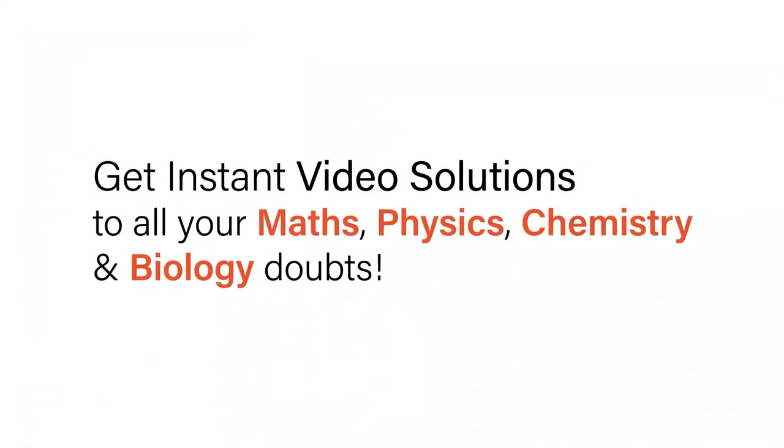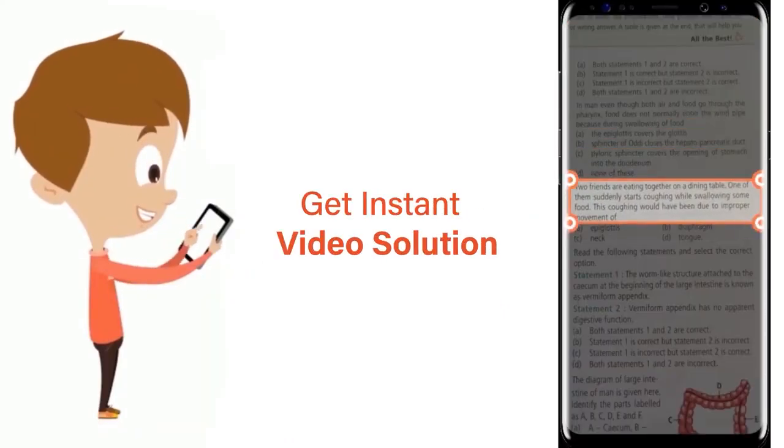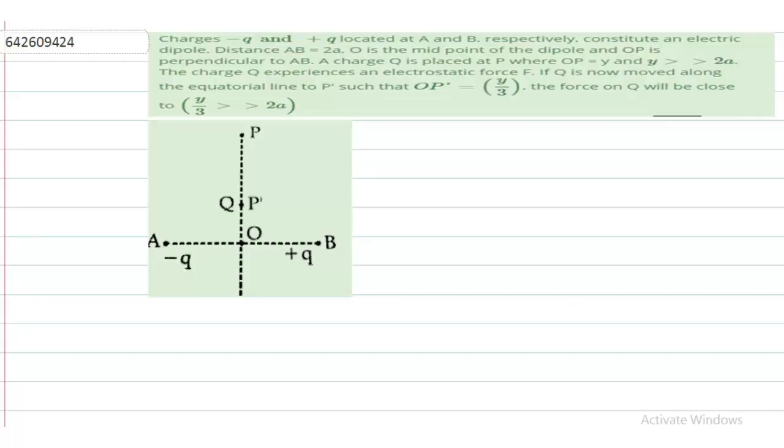With Doubtnet, get instant video solutions to all your math, physics, chemistry, and biology doubts. Just click the image of the question, crop it, and get instant video solution. Download Doubtnet app today. Hello, the question is: charges minus q and plus q located at A and B respectively constitute an electric dipole.